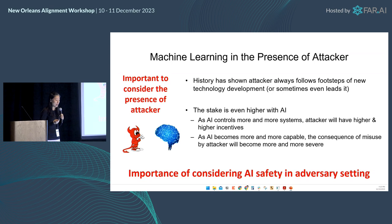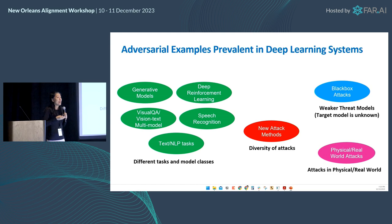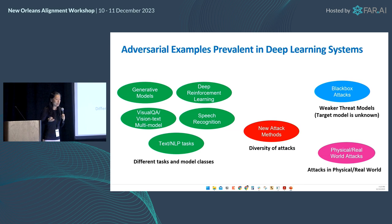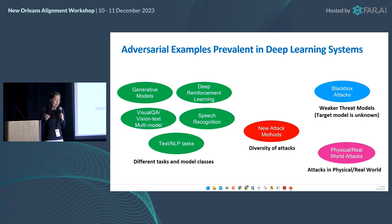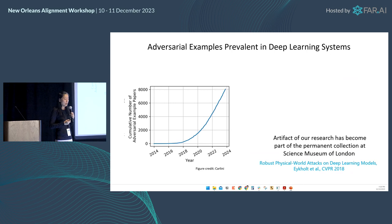As we talk about AI safety, it's really important to consider AI safety in the adversarial setting. Adversarial examples have been shown to be prevalent in deep learning systems. My group and many other researchers have done a lot of work in this space, showing that adversarial examples are prevalent across essentially all different tasks and model classes in deep learning. There are different types of threat models, including black-box and white-box attacks, which can be very effective — and attacks can even be effective in the physical real world.